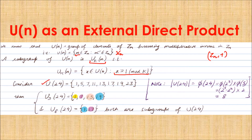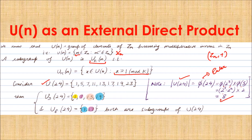For example, take U24, which is the group of units inside Z24 — the elements which possess multiplicative inverses inside Z24. These elements are 8 in number, which can be verified by finding the order of U24 using Euler's phi function. Splitting 24 as prime factors: φ(2³) × φ(3) = (2³ − 2²) × 2 = 4 × 2 = 8, indicating U24 has 8 elements.